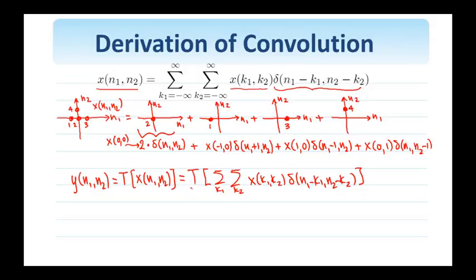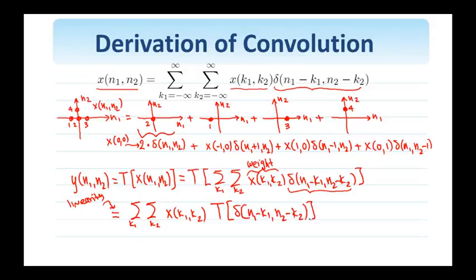Now, I know that the system is linear and spatial invariant. The system accepts inputs that are function of n. So these deltas are the signals that the system recognizes and processes. While this x(k1, k2) here, since it's independent of n1, n2, acts as a weight, as a constant. So, the system sees this weighted sum of signals, and since it's linear, the output of the system is going to be this sum of the weighted individual outputs. The weights are x(k1, k2), and the output is t with shifted deltas at the input.